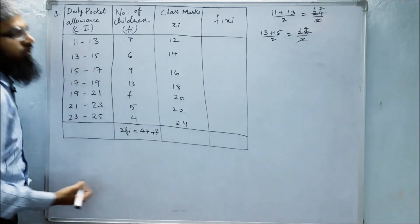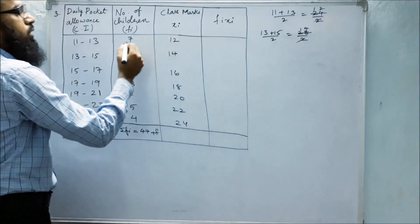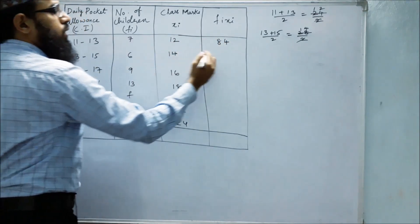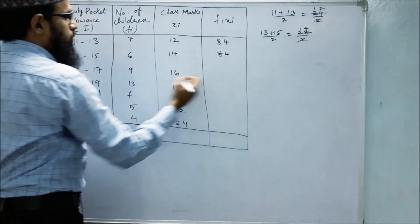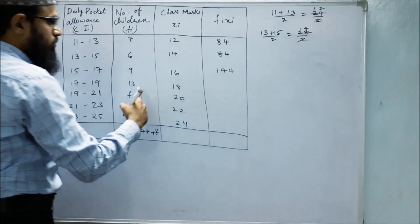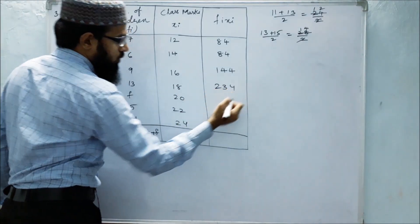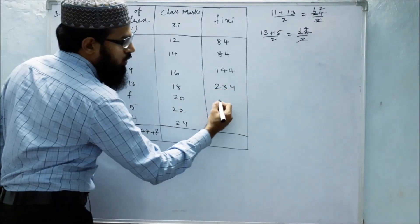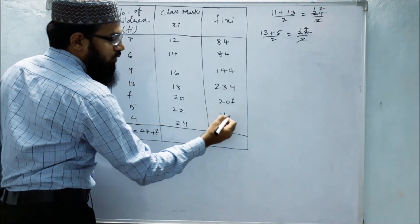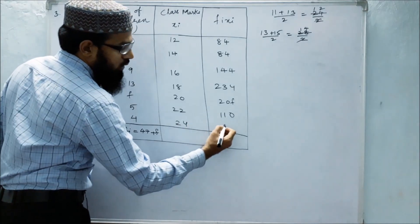Next we'll find out the product of fi and xi. 7 times 12 is 84. 6 times 14 is 84. 9 times 16 is 144. 13 times 18 is 234. 20 into f is 20f. 5 into 22 is 110. 4 into 24 is 96.